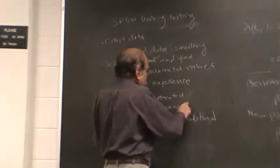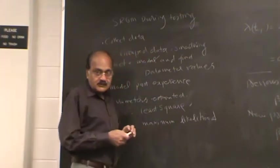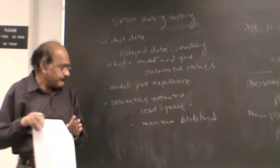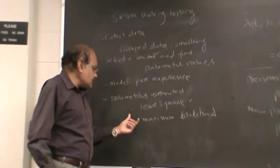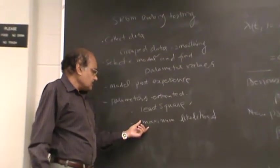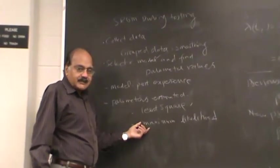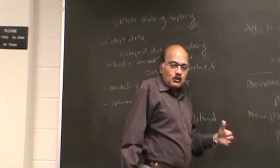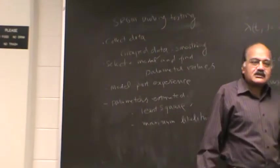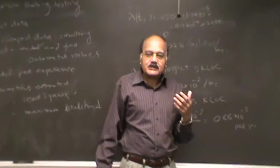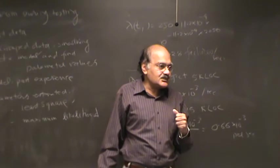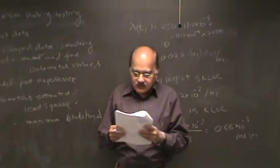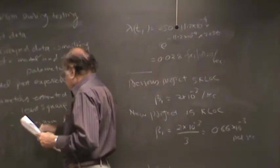This is the one that is used in Excel, the least squares. But in some cases it can be shown that maximum likelihood, if you have a lot of data, then statisticians prefer maximum likelihood. But for most of the kind of data that you would come across as a software reliability engineer, it probably will not make a lot of difference. You can pick either of them, and least squares is the one that is used most commonly.